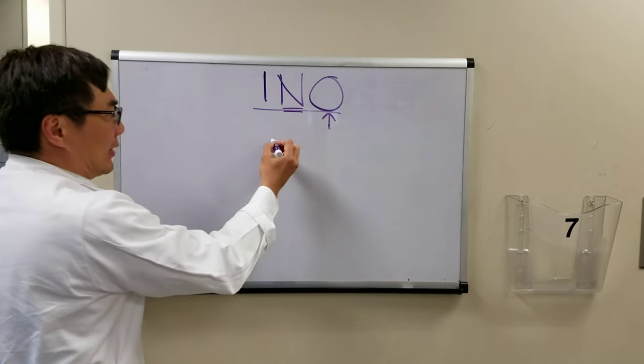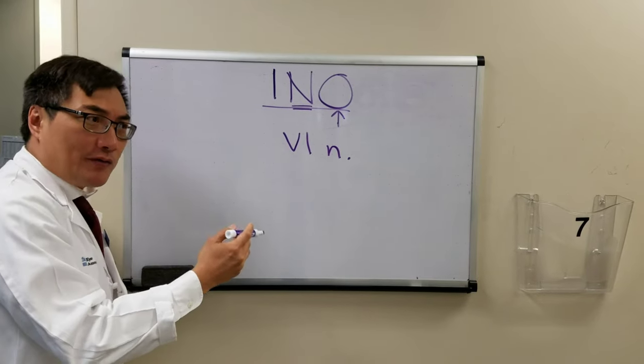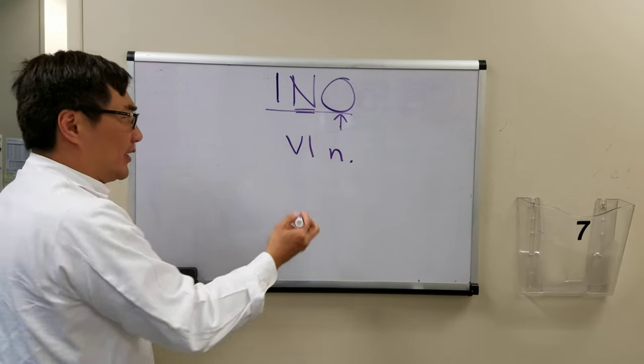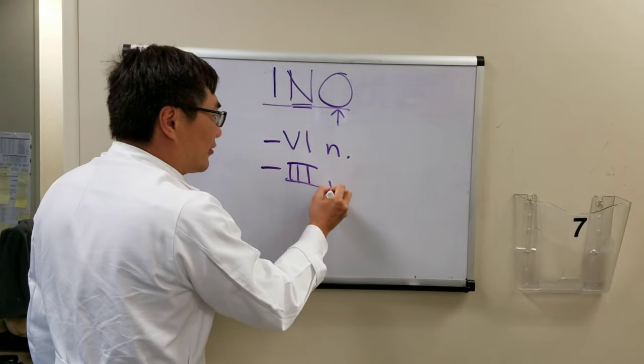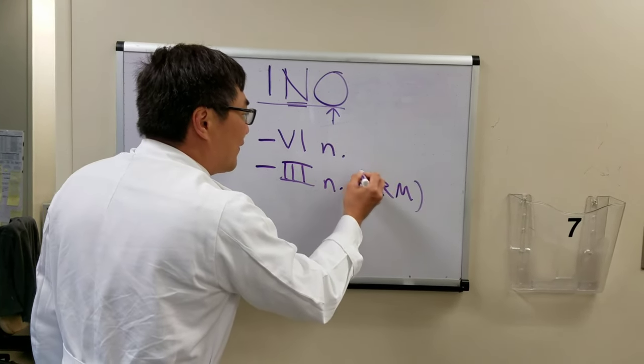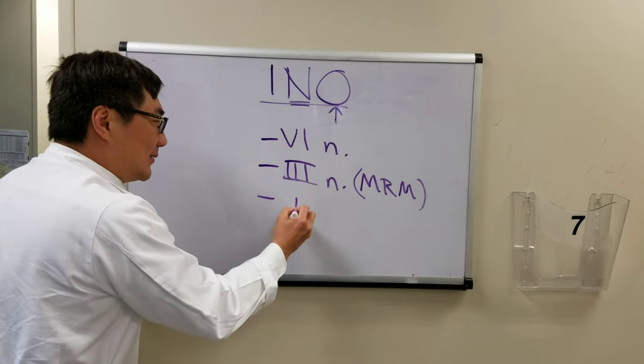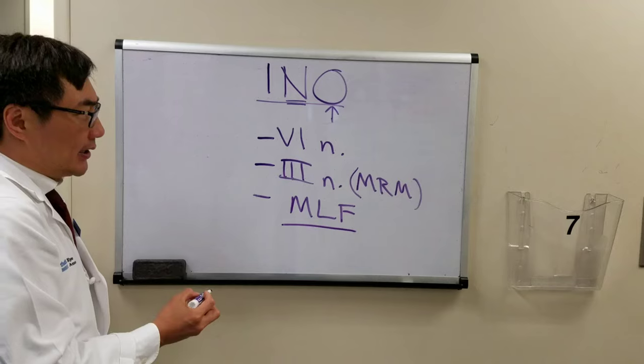Nuclear - and the two nuclei that we're talking about are the sixth nerve nucleus, which you heard about before if you watched the horizontal gaze palsy video. The sixth nerve nucleus talks to the contralateral third nerve nucleus, the medial rectus muscle in this case, via a fascicle which is longitudinal and medial, which we call the medial longitudinal fasciculus.